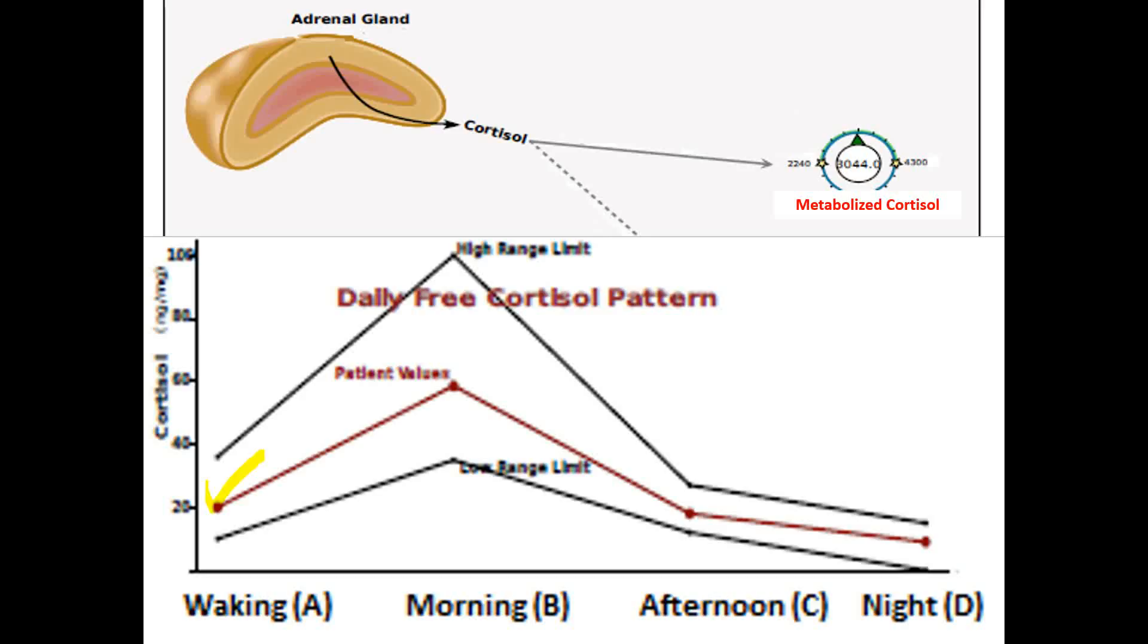You've got a waking measurement, which tells you not the cortisol right when you wake up, but it's a urine sample collected when you wake up. It reflects the night's total of free cortisol. Usually over those next two hours, there's a big surge of cortisol after you wake up. We'll want to see what that looks like in that morning sample. Typically, results have dropped down by the afternoon and even more so around bedtime. We want to look at those four values, looking for that up and down pattern.